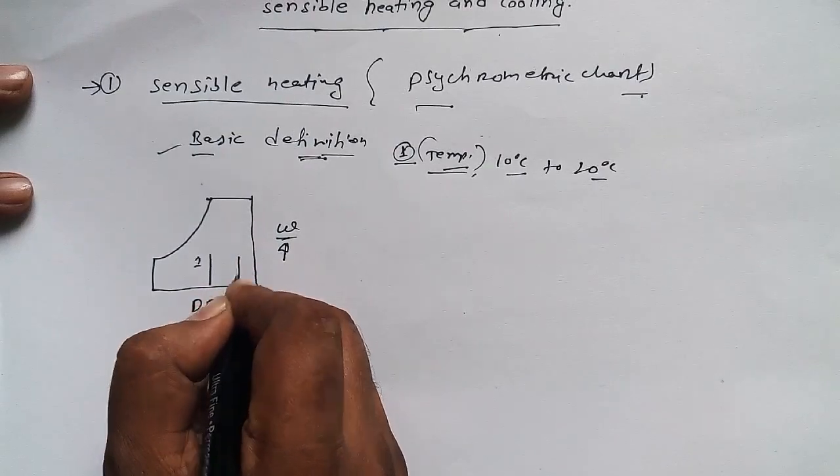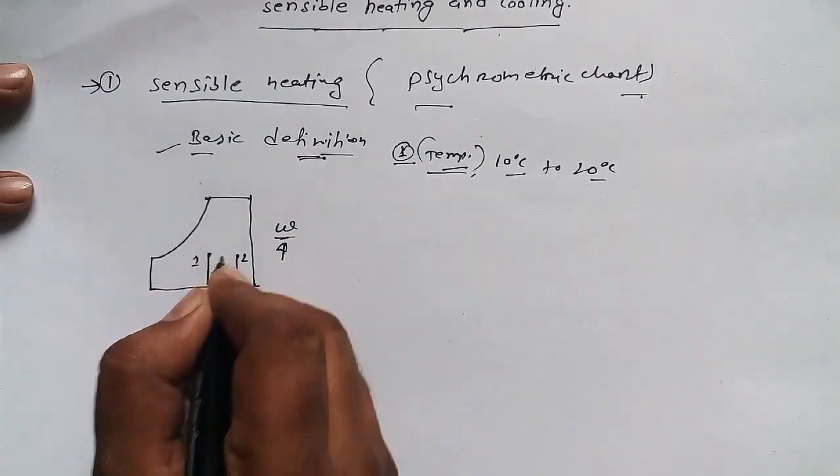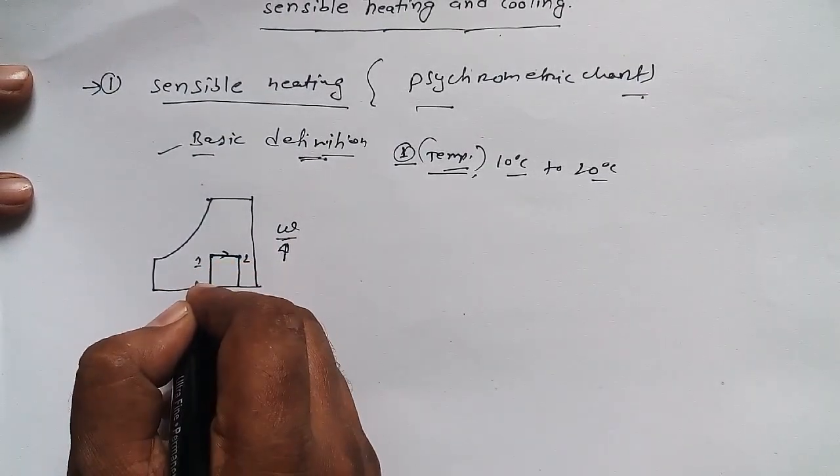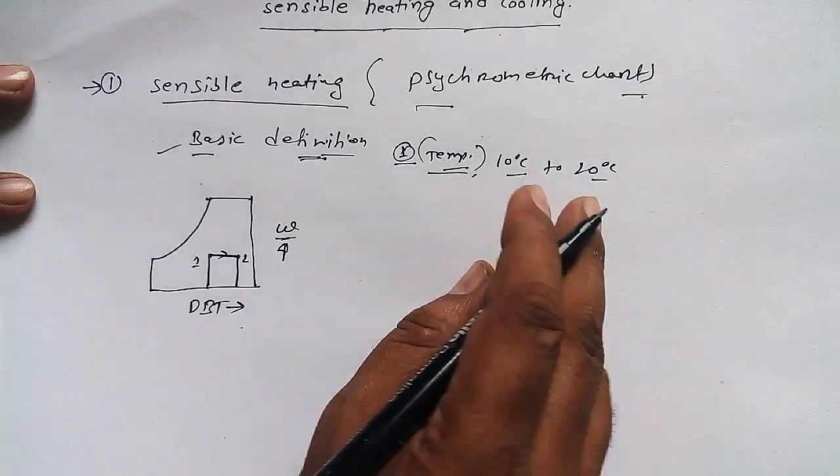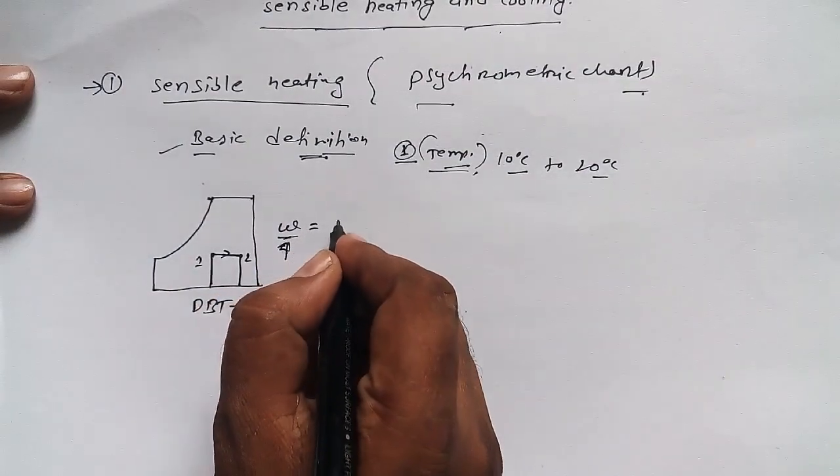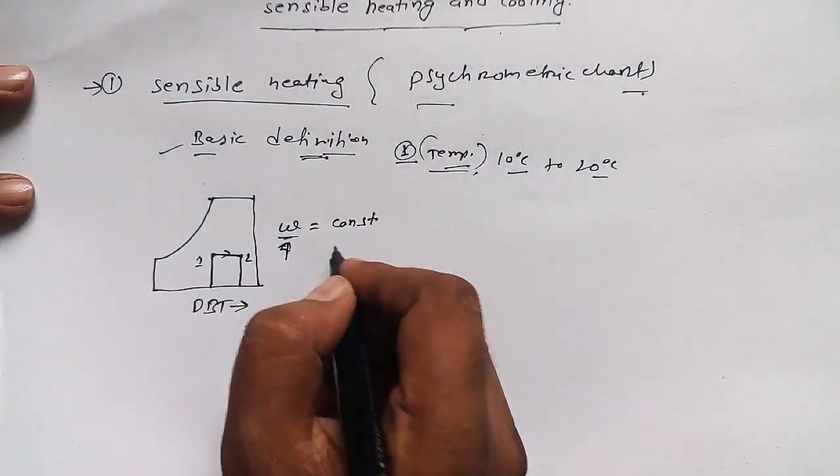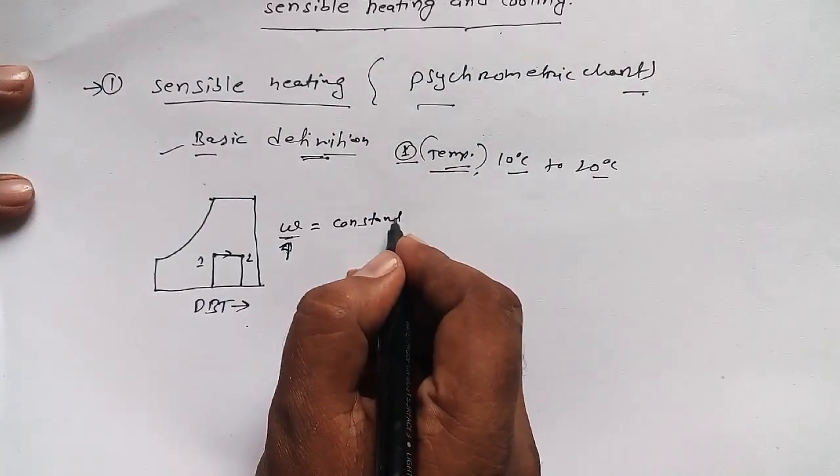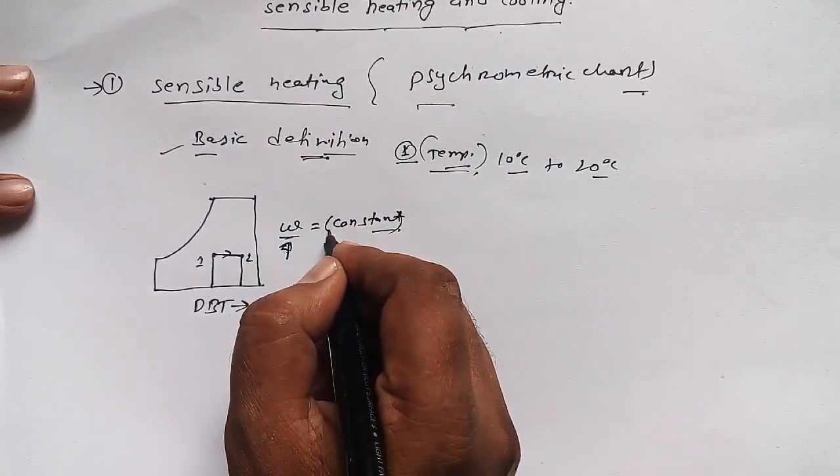This is point one, and this conditioning takes this point from point one to two. If the dry bulb temperature is increasing and the specific humidity or humidity ratio is constant for that case, we call it sensible heating.